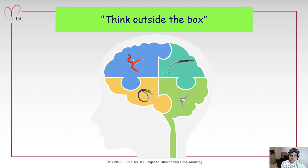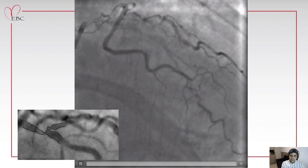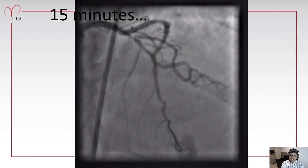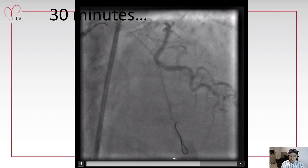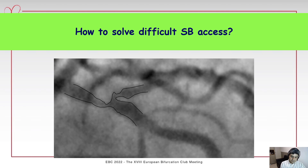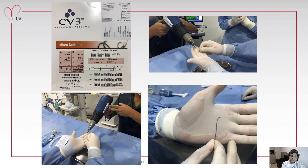When nothing works, we have to think outside the box. This is an example of an LAD diagonal bifurcation with a very acute retroflex angle of the side branch. We tried our best to manage it but could not wire the side branch due to this acute retroflex angulation. After 30 minutes of attempts with many operators, many wires, and many wire reshapings, we decided to move to a different technique. We used a non-conventional microcatheter used in neurology and neurointervention — a shapeable microcatheter. We used a stylet to shape it with a very acute shape, as we didn't have a pre-shaped microcatheter like the Supercross available at that time.